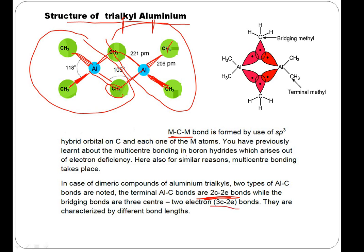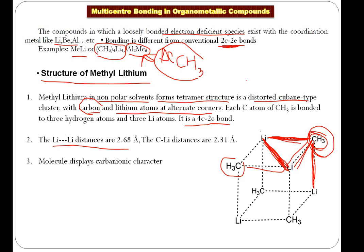This three-center two-electron bond is the same type of bond observed in boron hydrides — a class of compounds studied in the s and p block. The bonding in trialkyl aluminum is similar to that in boron hydrides. Looking at the orbital picture: the sp3 hybrid orbital of the bridging methyl group and the p orbital of aluminum overlap to generate the three-center two-electron bond.